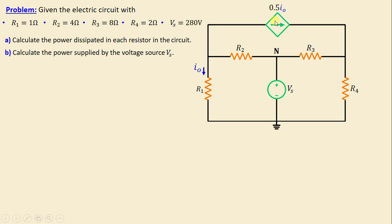Additionally, we can observe the presence of a dependent source — specifically a current-controlled current source. The questions are: to calculate the power dissipated in each resistor, and to calculate the power supplied by the voltage source VS. Let's move on to the solution.